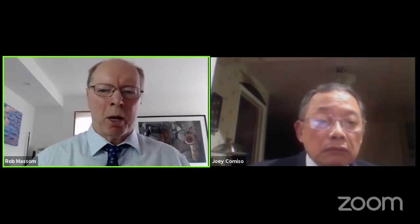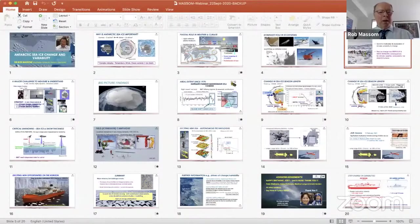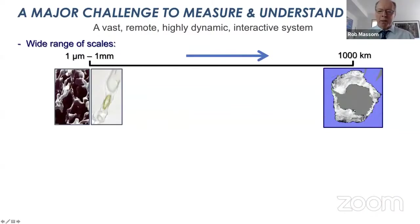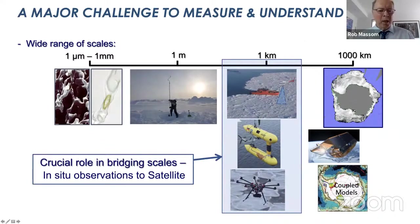Sea ice covers a wide range of scales of interest — from microns to millimetres at the microstructure scale, up to 100 to 1000 kilometre scales, which is the satellite view of polar sea ice. To get around this, we use a strategy of in-situ information, going into the field on icebreakers and carrying out process studies, and we attempt to extend this by remote sensing. Modelling also plays a key role in enabling us to pull together and synthesize our observations. And autonomous technologies are opening up exciting new information, enabling us to bridge the scales between in-situ observations and satellite.